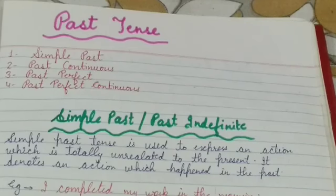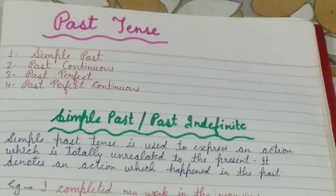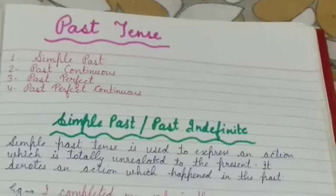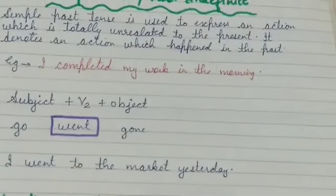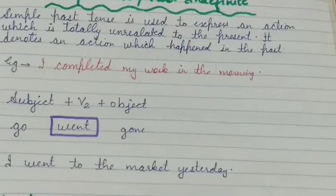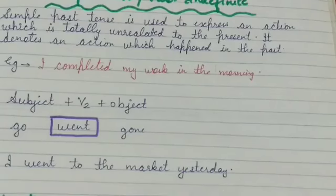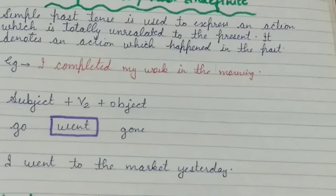What is the identification of this tense? Simple past tense is used to express an action which is totally unrelated to the present. It denotes an action which happened in the past. Example: 'I completed my work in the morning.' The formula is: subject plus second form of the verb plus object. Object is not a compulsory part of a sentence.